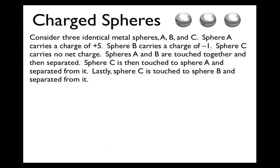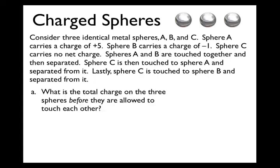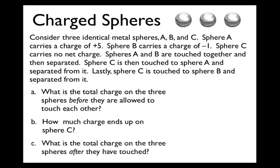Here's a thought experiment. If I had three identical metal spheres A, B, and C — sphere A carries a charge of +5 units, sphere B carries a charge of -1, and sphere C carries no net charge, so it is electrically neutral to start — and we touch A and B together then separate them, then touch A and C together then separate them, and finally touch C and B together and separate them. What's the total charge on the three spheres before they touch? If we assign A a +5, B a -1, and C neutral (zero), we add those up and the net charge would be +4 in these arbitrary units.